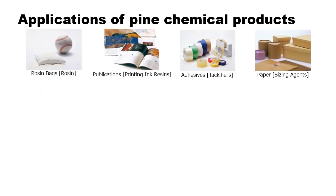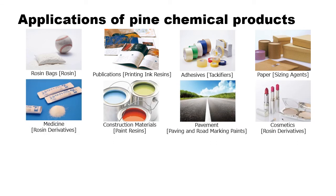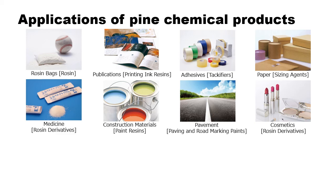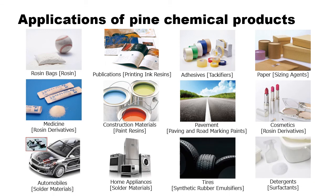Rosin and fatty acids have a wide range of applications. For printing inks, rosin is used to uniformly adhere pigments to paper and other substrates. In the paint industry, fatty acids are used as raw materials for manufacturing alkyd resins. Resin is also an essential component of soldering paste. And for synthetic rubber such as tires, rosin is used as an emulsifier for manufacturing styrene-butadiene rubber.